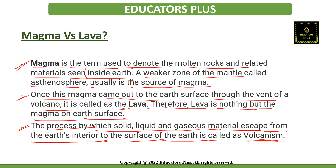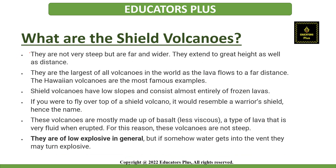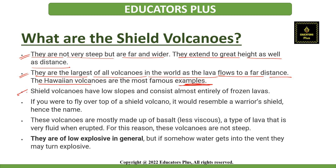Now let's discuss the types of volcanoes. Volcanoes are classified on the basis of the nature of the eruption and the form developed at the surface. The first type is shield volcanoes. They are not very steep but are far and wider, and they extend to a great height as well as distance. They are the largest of all volcanoes in the world, as the lava flows to a far distance. The Hawaiian volcanoes are the most famous example of shield volcanoes. Shield volcanoes have low slopes and consist almost entirely of frozen lavas. If you were to fly over the top of a shield volcano, it would resemble a warrior's shield — hence the name.